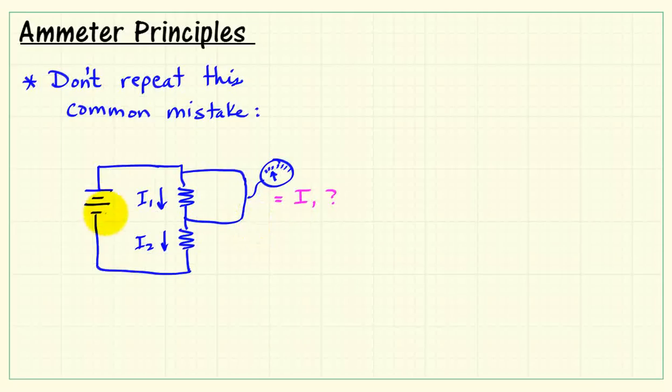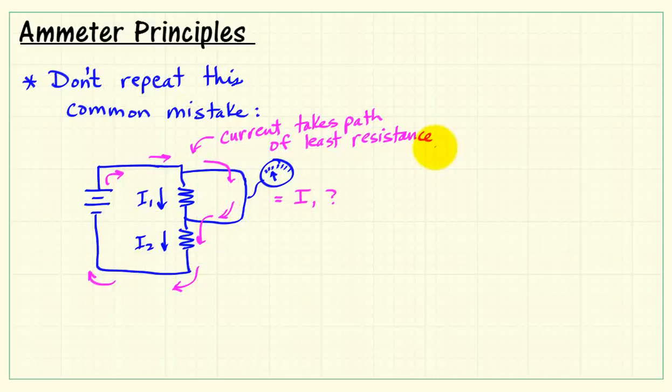Well, if we think about the ammeter as a wire with a display or meter attached, and we know that current takes the path of least resistance, that means current will much prefer going through a highly conductive wire than through the resistor. That means all of the current is diverted from the resistor through the meter and back out, and it completely disrupts the way the original circuit was operating.